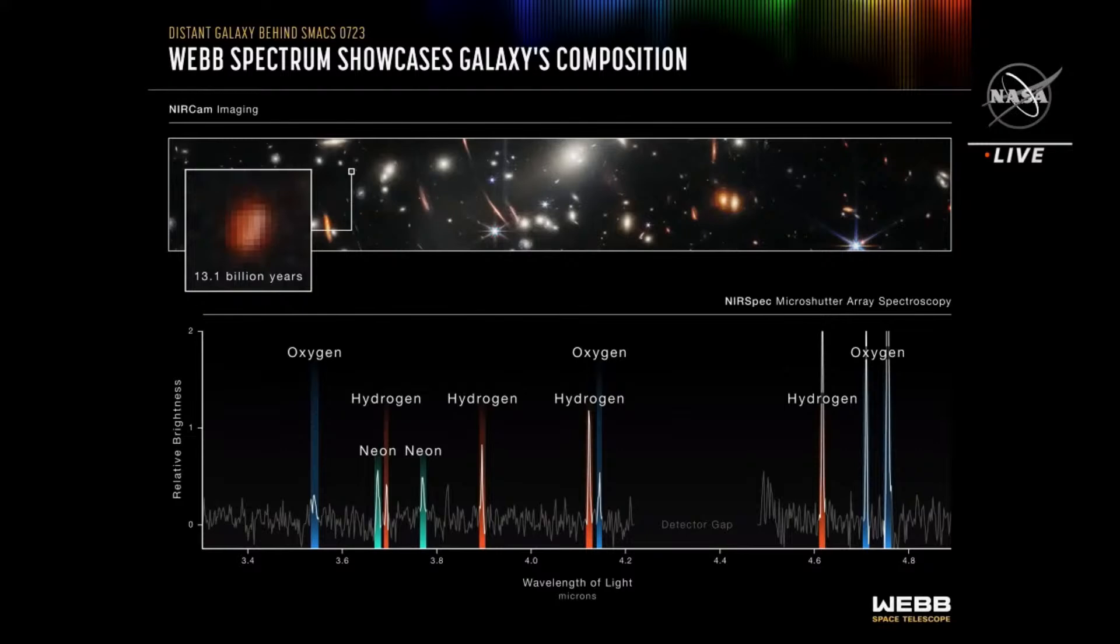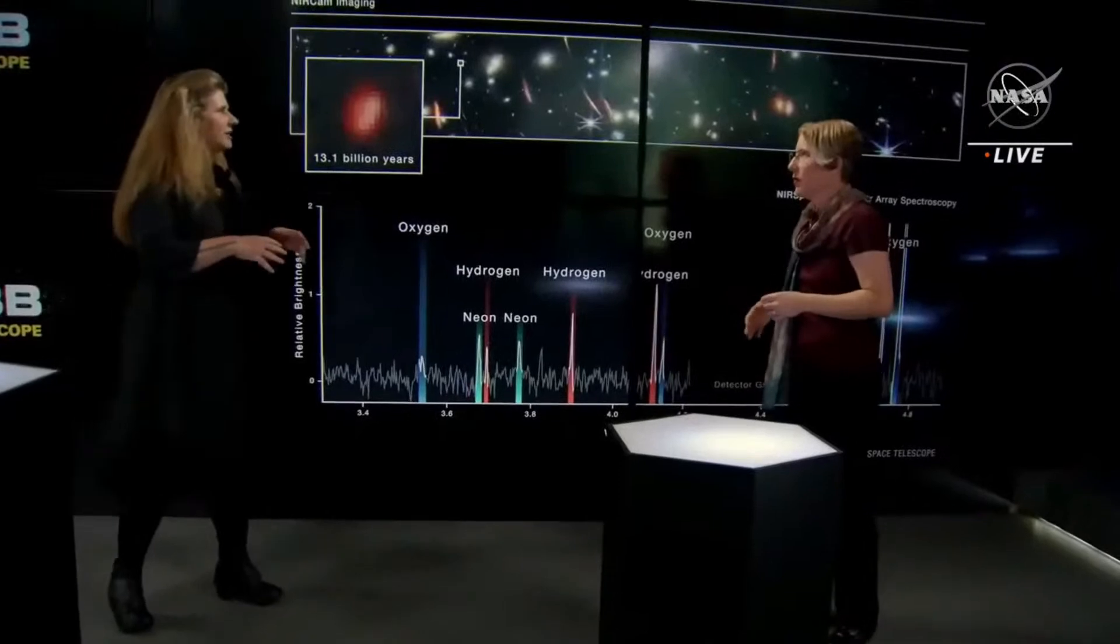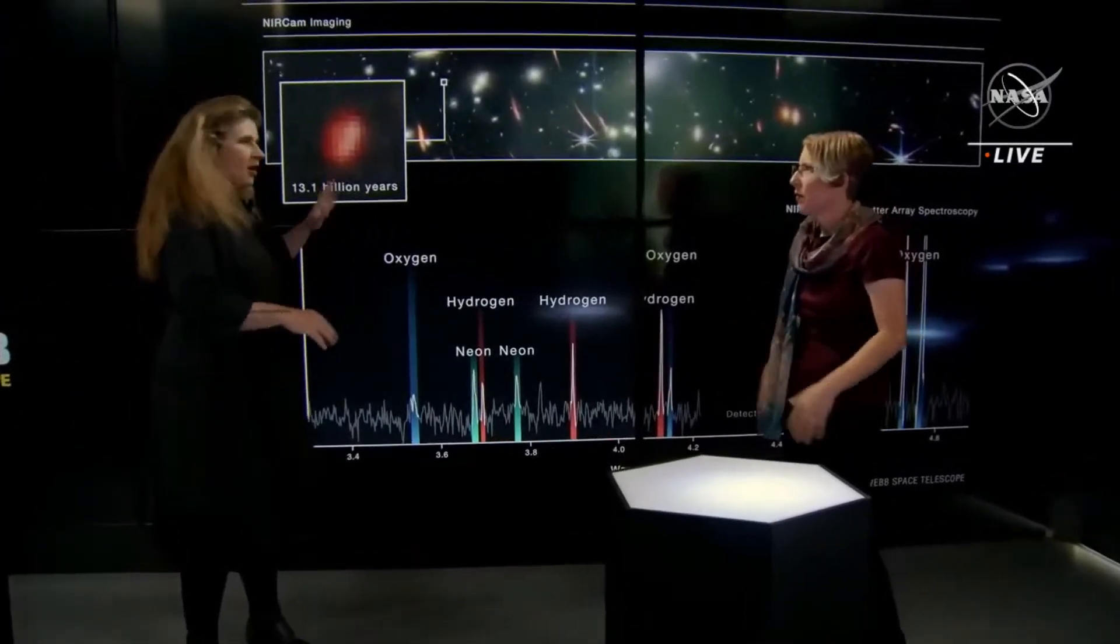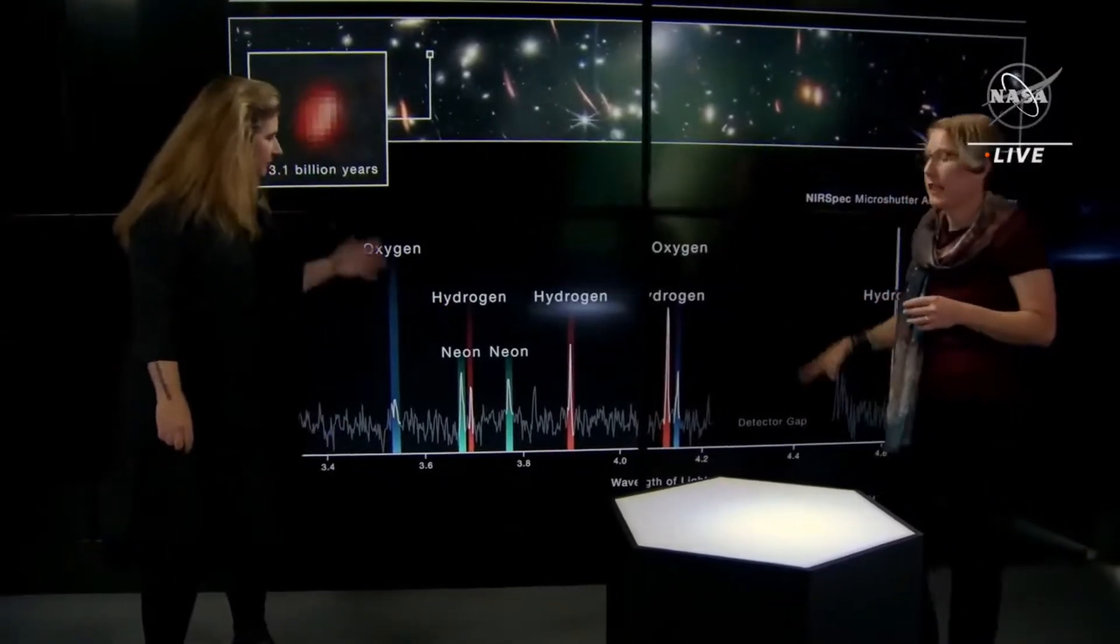We're seeing the elements of oxygen and hydrogen, as well as neon. This is how the oxygen in our bodies was made in stars, in galaxies. And we're seeing that process get started. This is now the farthest away galaxy that we have this sort of detailed information about, that we know what it's made of.